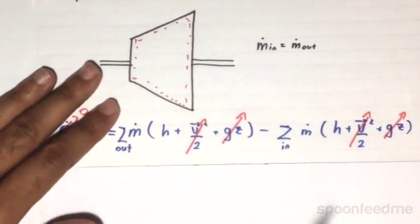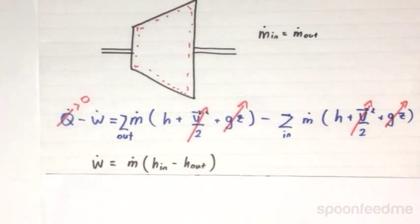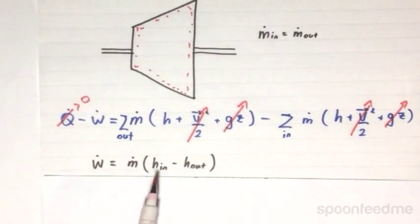This leaves us with only four terms: the W dot, the mass flow rate, and the entrance and exit enthalpies. Now compressors are just like turbines.